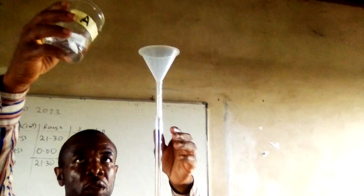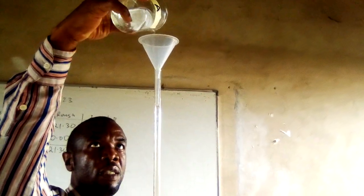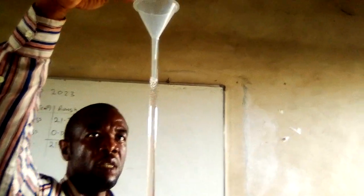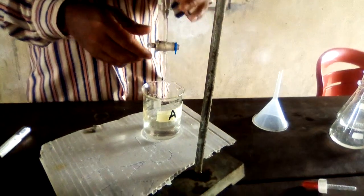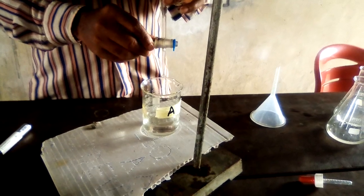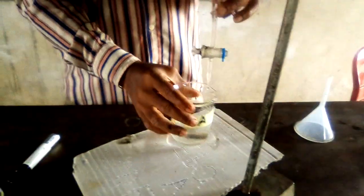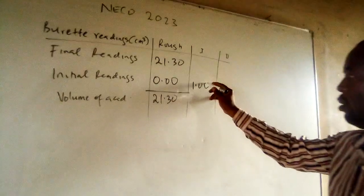For the first accurate titration, we add more acid to the burette. This time we start from a whole number — reducing the acid level to 1.00 cm³. The initial reading is recorded as 1.00.